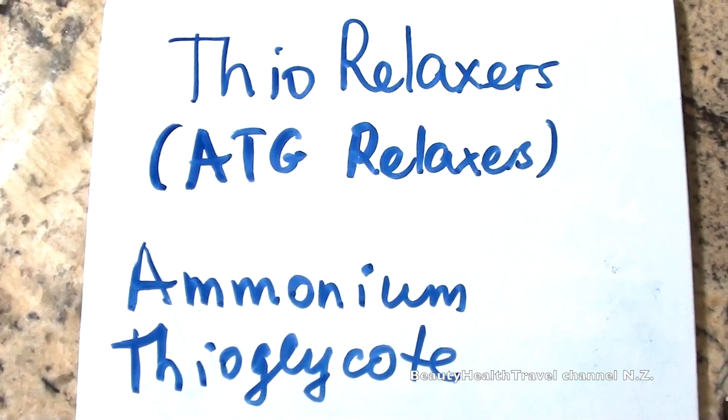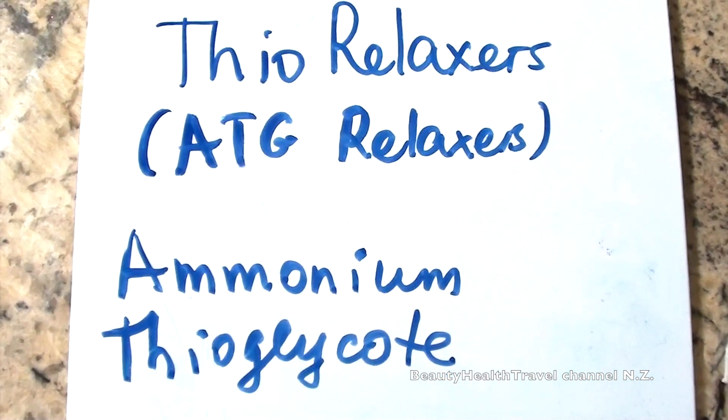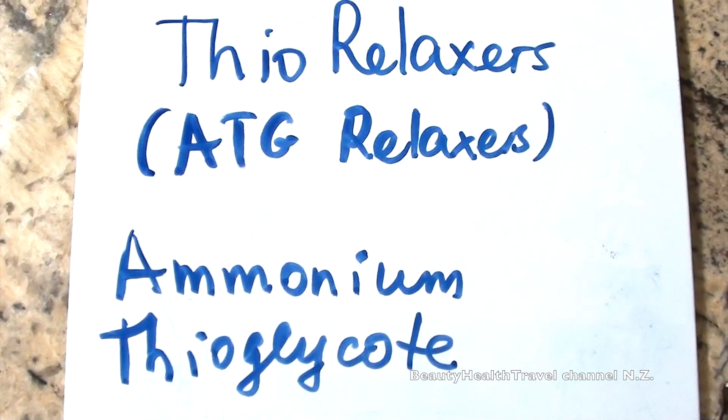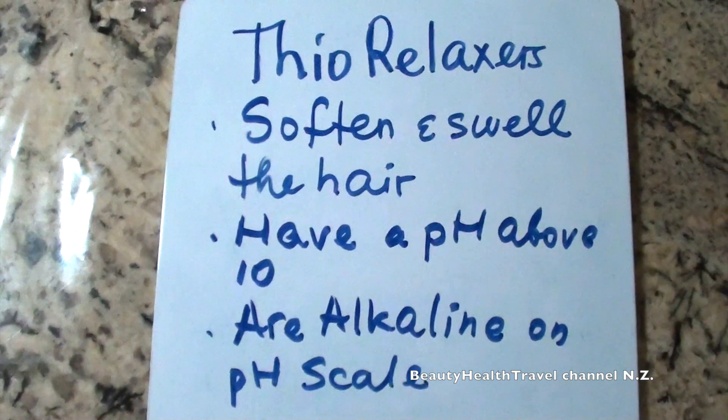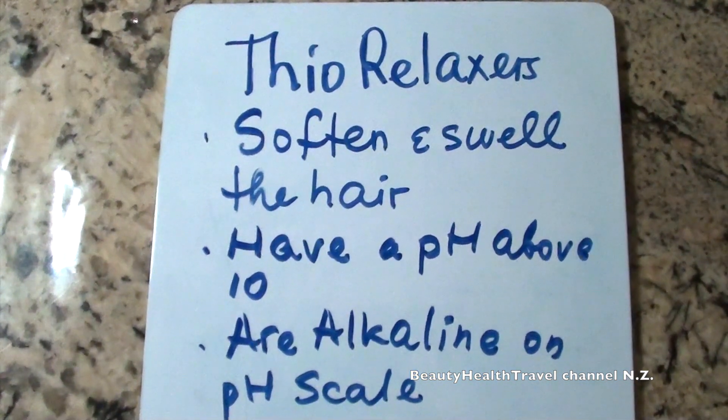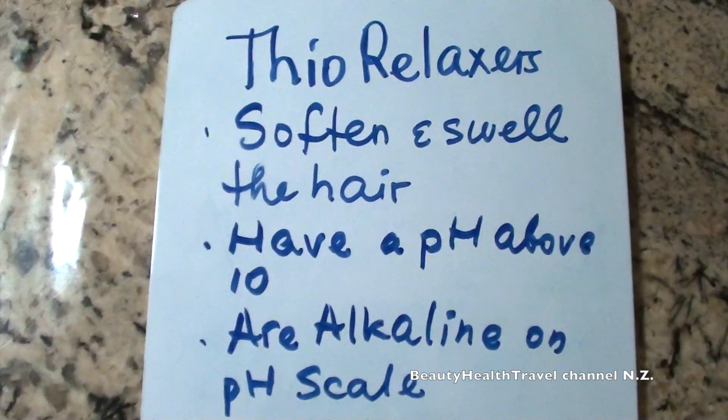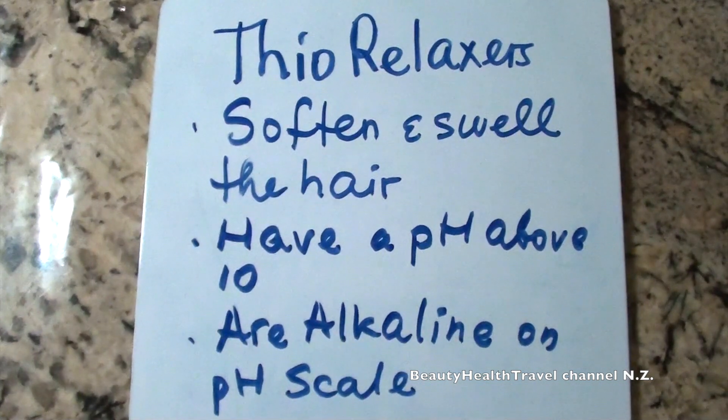Dio relaxers, also called AGT relaxers, are ammonium thioglycolate relaxers. They're milder than sodium hydroxide relaxers. Dio relaxers soften and swell the hair. They have a pH above 10 and they're highly alkaline, but not as alkaline as sodium hydroxide relaxers.